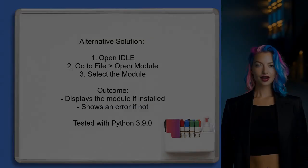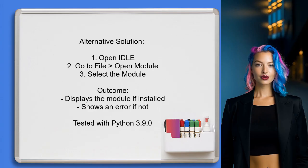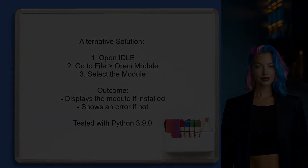An alternative approach suggested by a user is to check if a module is installed using Python's IDLE. They recommend opening IDLE, navigating to File, then Open Module, and selecting the desired module. If the module is installed, it will display. If not, an error message will appear.